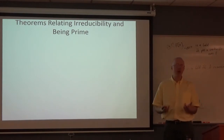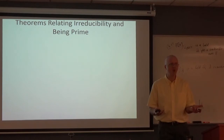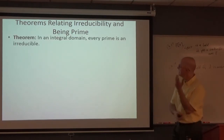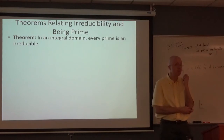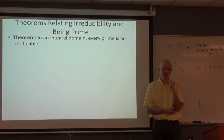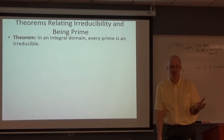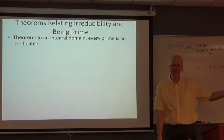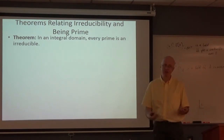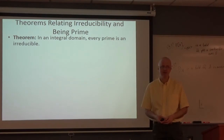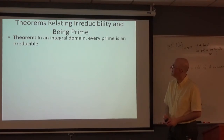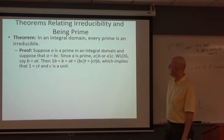Irreducibility and being prime are not exactly the same ideas but they are related. In general, every prime is irreducible. Being prime means it satisfies the analog of Euclid's Lemma: A divides BC means A divides B or A divides C. Being irreducible means you can only factor it in trivial ways — one of the factors has to be a unit. Every prime is irreducible, and here's the proof.